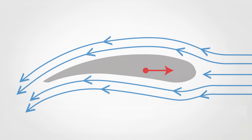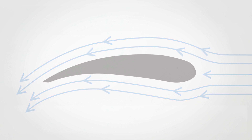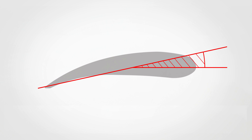But how does the wing rise when it is hit by the airflow? First of all, the wing is placed in a slightly inclined position to improve the airflow. In this way, the angle of attack — which is the angle formed between the cord line of the wing and the airflow direction — is increased.